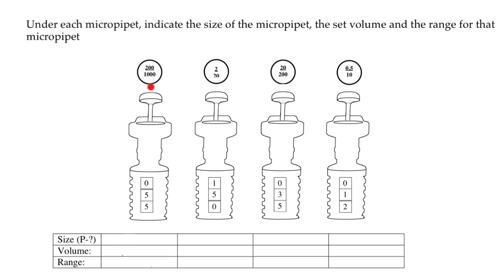The range is shown on each micropipette on the top of the button. For this one, it is between 200 microliters and 1000 microliters.